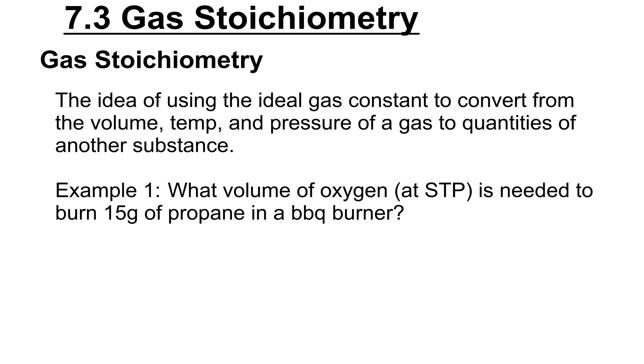Gas stoichiometry is the idea of a chemical reaction involving one or more gases. We're either going to have one as a reactant or a product or maybe a little bit of both. It's the idea of using the ideal gas constant or some other piece of information related to the ideal gas constant to convert from the volume, temperature, and pressure of a gas to quantities of another substance.